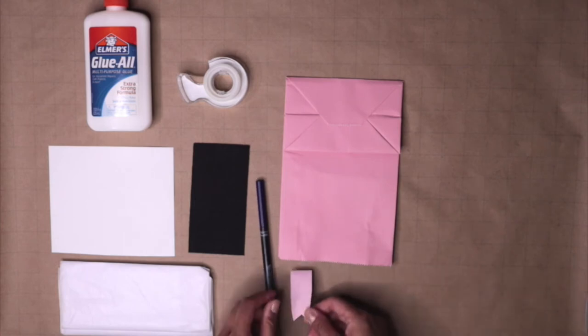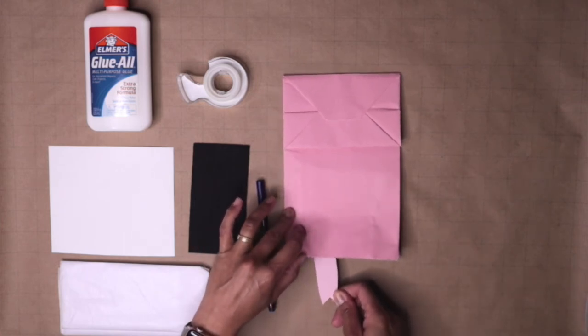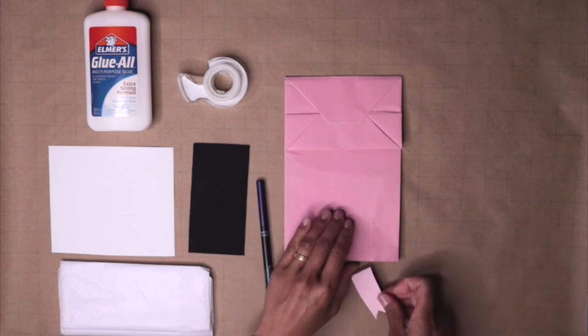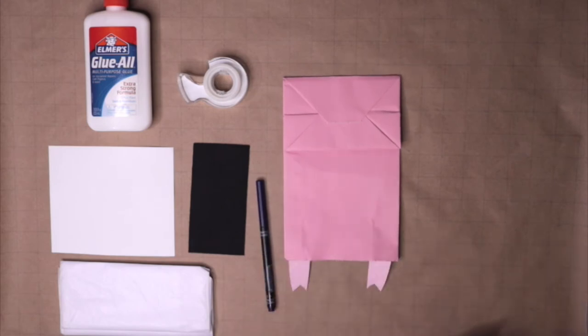Next, use glue or tape and attach the legs and arms. You will need four pieces for this.